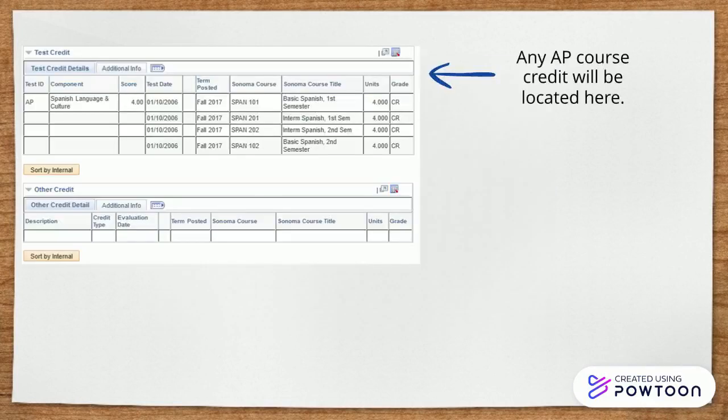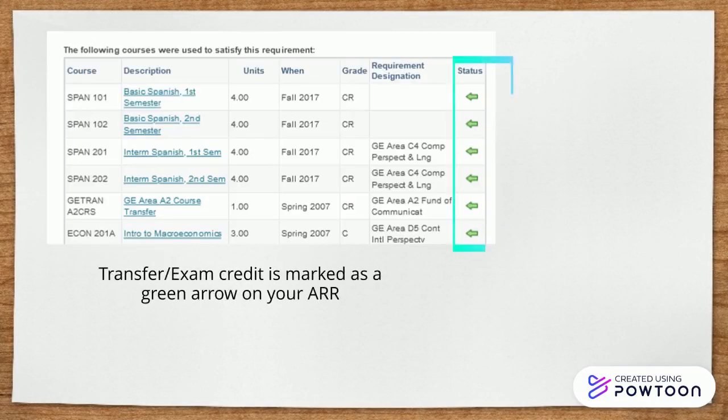At the bottom of your TCR, you can locate any AP courses and any additional credits such as CLEP exams. In your academic requirements report (ARR), these transfer credits will be marked as a green arrow.